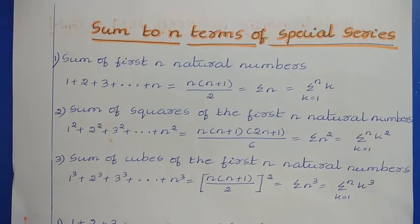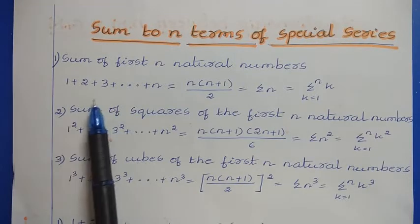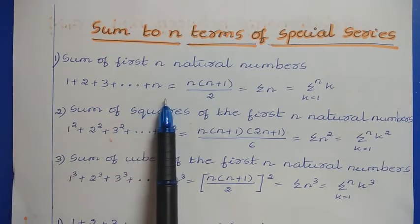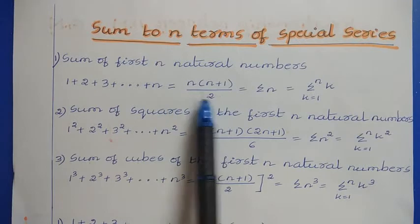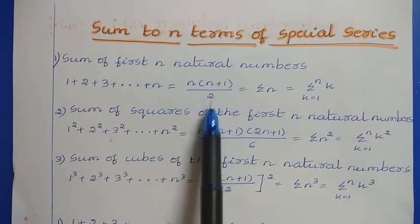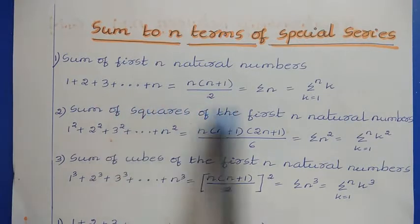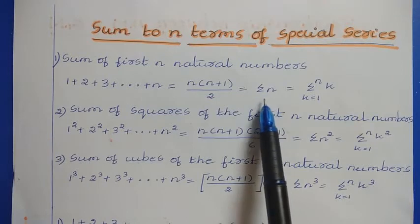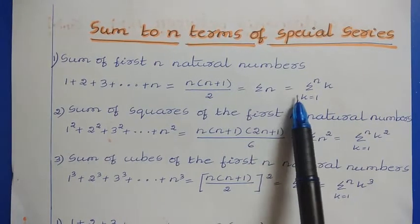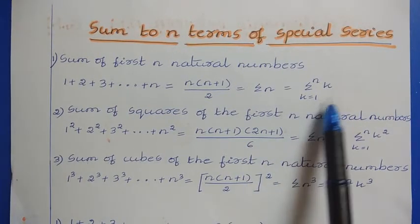The first one is sum of first n natural numbers, which we can denote as 1 plus 2 plus 3 and so on up to plus n. That we can write in short as n into n plus 1 divided by 2, or this sum we can represent in terms of sigma as sigma n, or sigma k equals 1 to n of k.